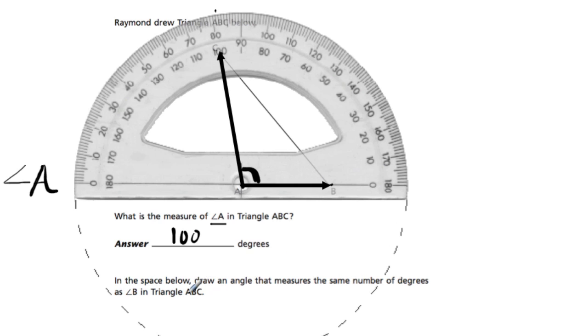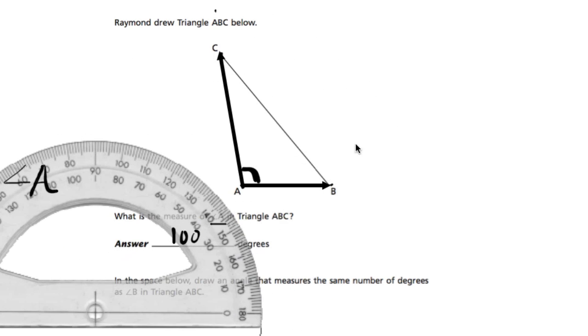Now for the next part, they say draw an angle that measures the same number of degrees as angle B. So first let's measure angle B. Where is it? Angle B is right here.